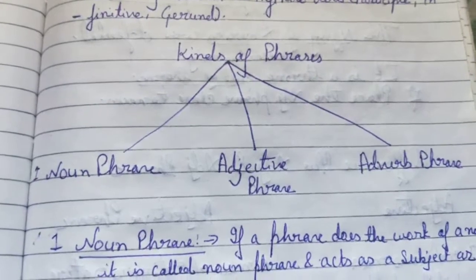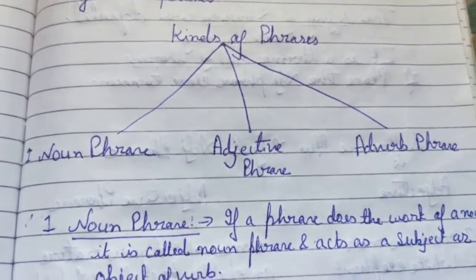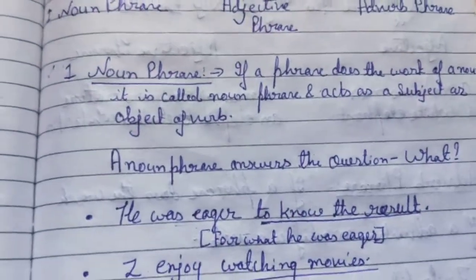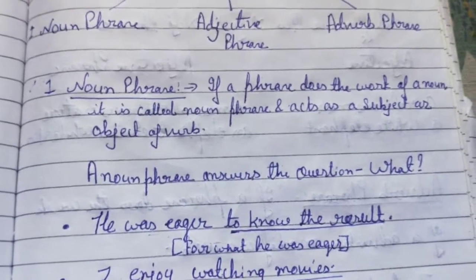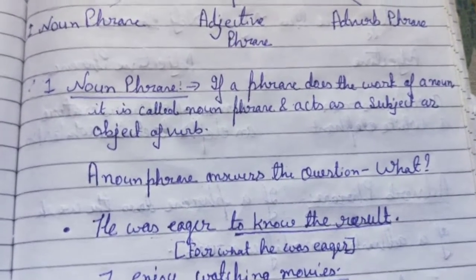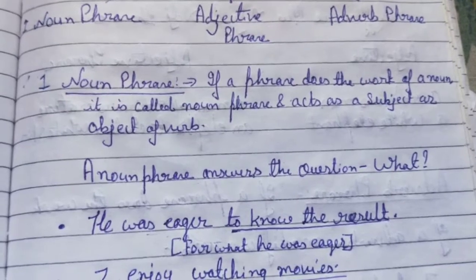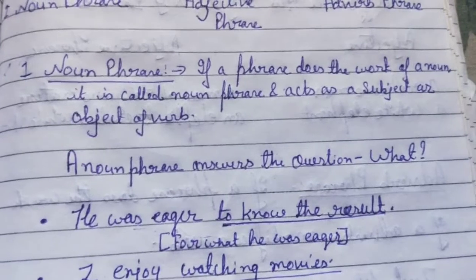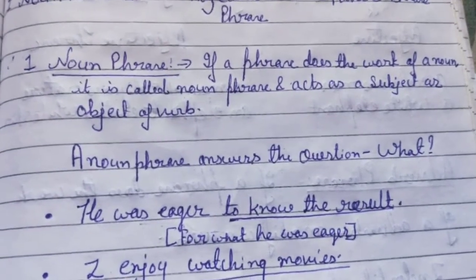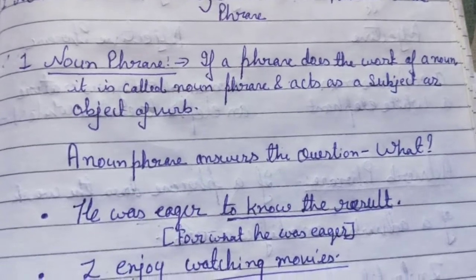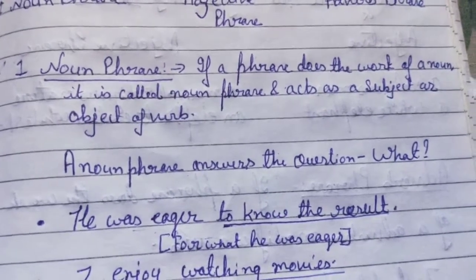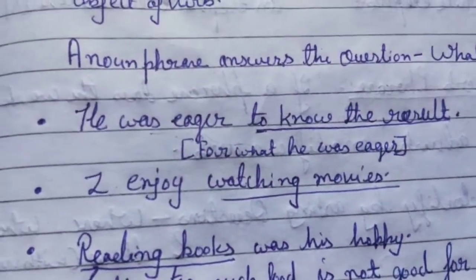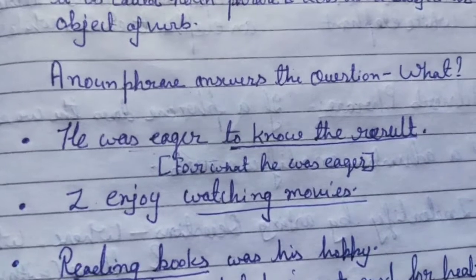There are three kinds of phrases: noun phrase, adjective phrase, and adverb phrase. Let's take the first one — noun phrase. If a phrase does the work of a noun, it is called a noun phrase. A noun phrase acts as a subject or object of a verb in a sentence. To identify a noun phrase, ask the question 'what' from the verb and the answer you get will be the noun phrase.